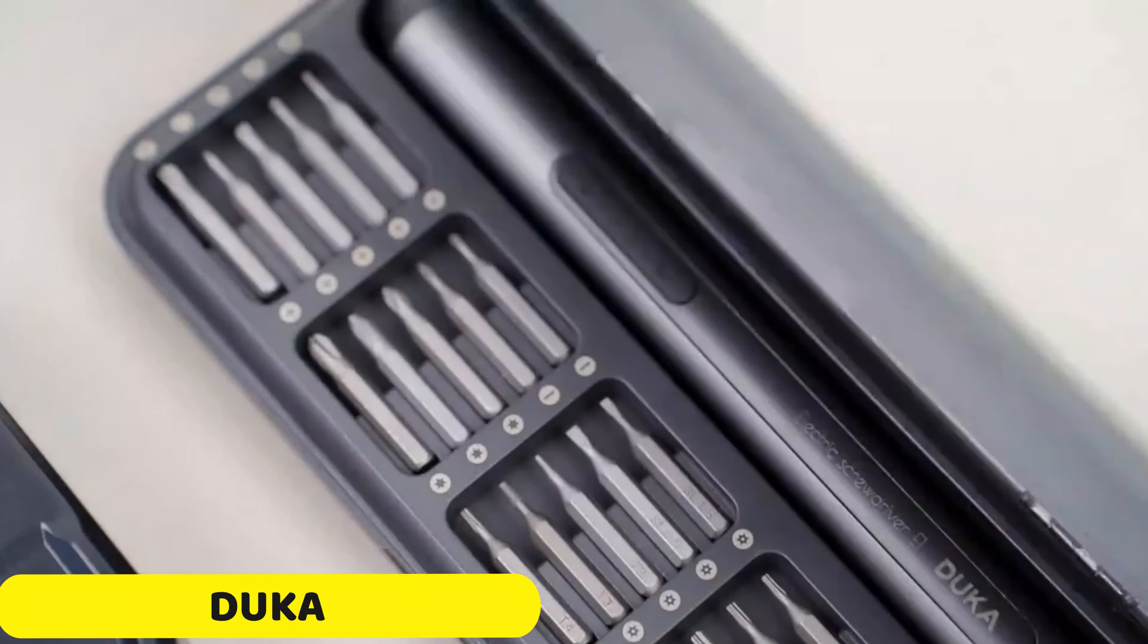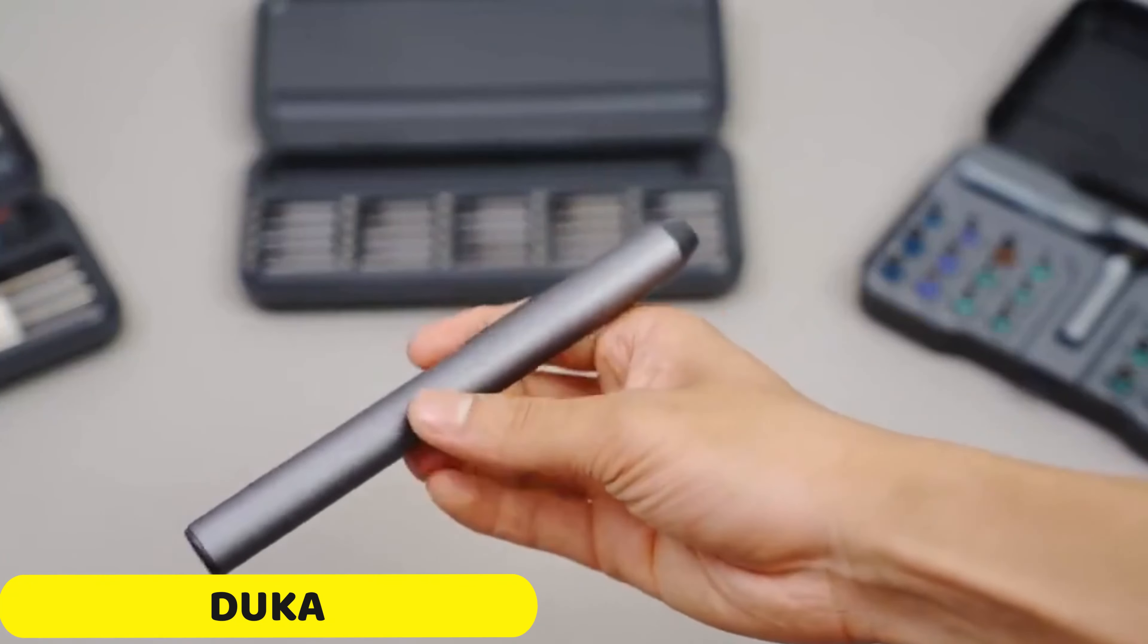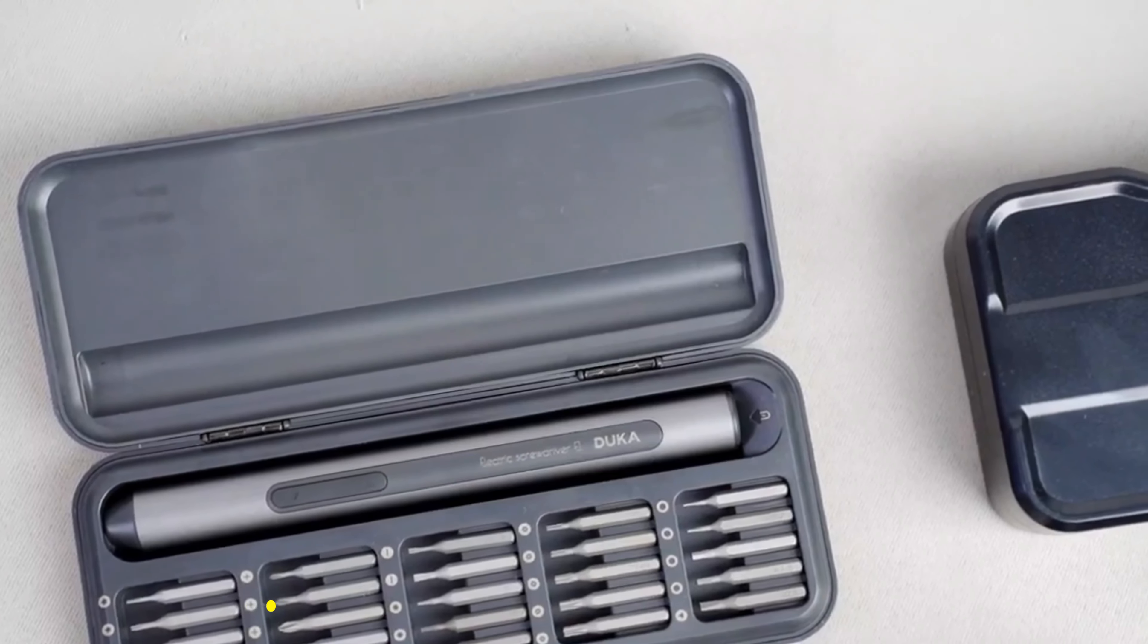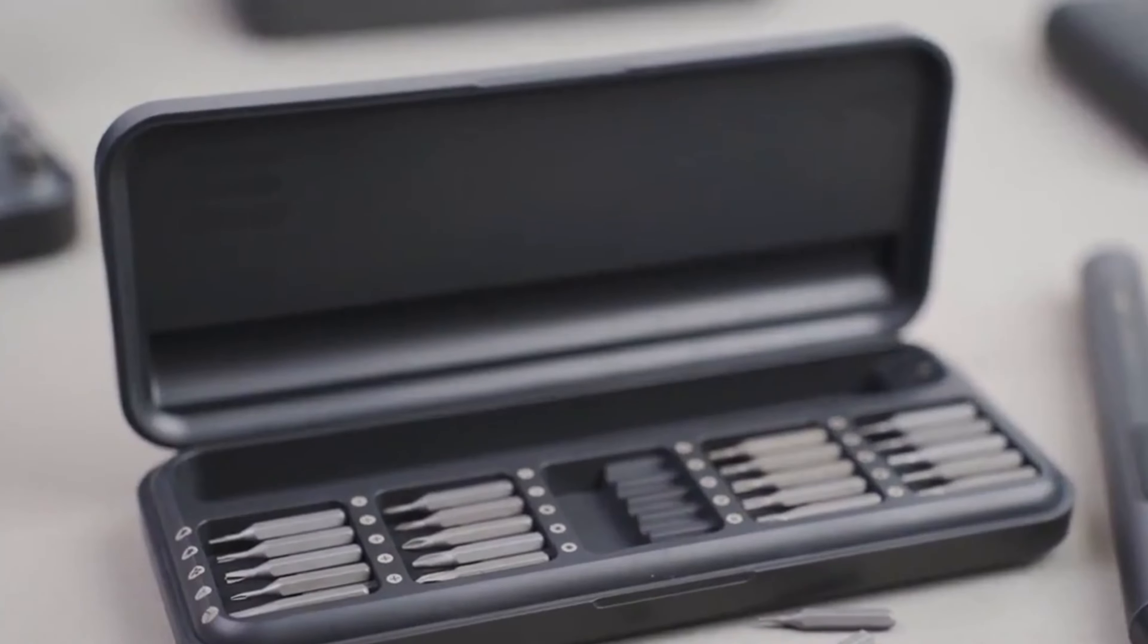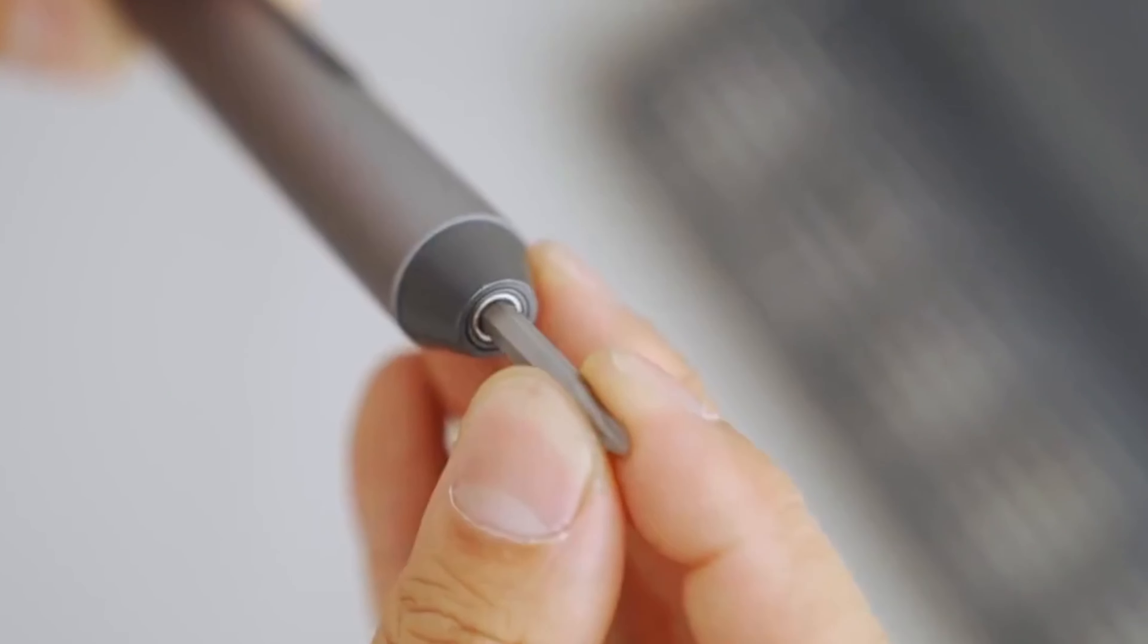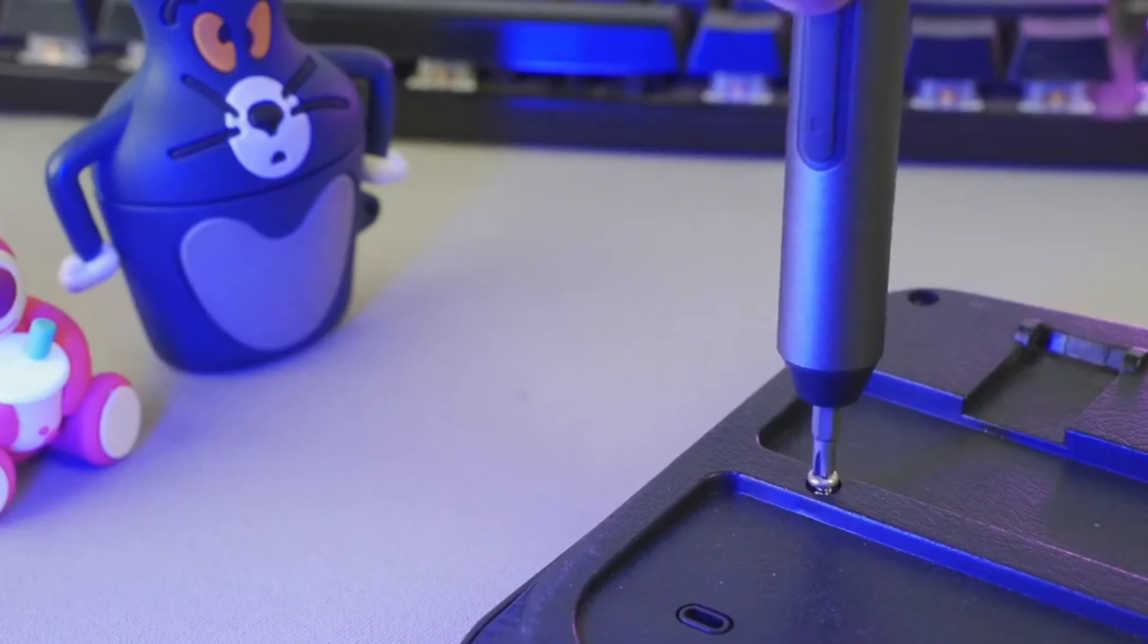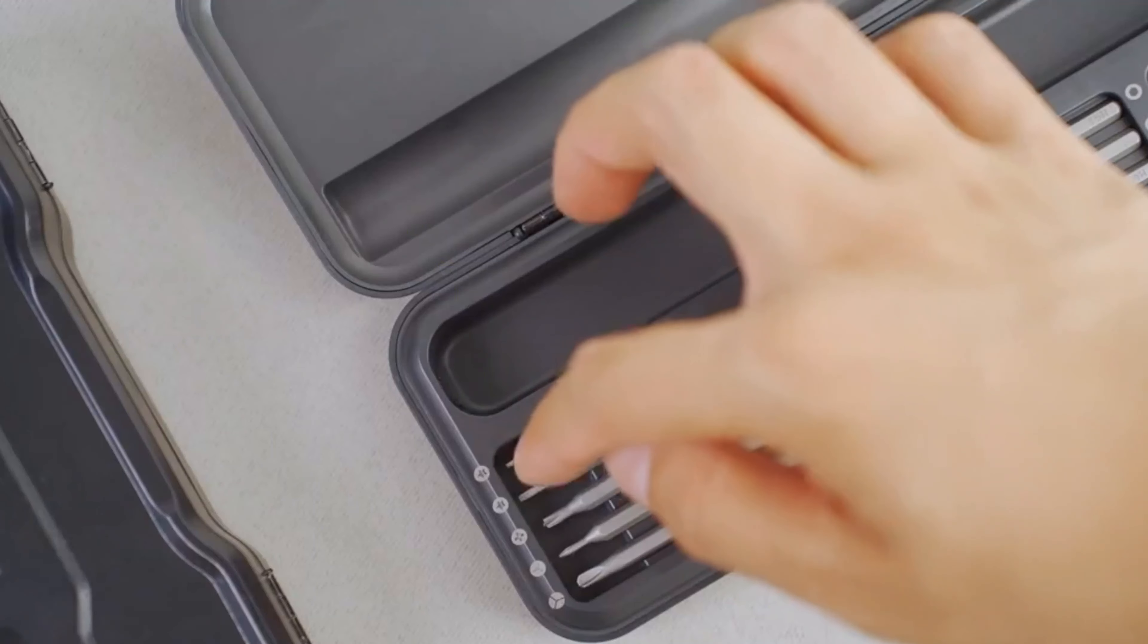Number 1: Duca Electric Screwdriver Set. The Duca Electric Screwdriver Set is a compact and powerful tool designed for precision work. It offers an electric motor that delivers consistent power, making it ideal for even the toughest tasks. The set is cordless and rechargeable, allowing you to work anywhere.